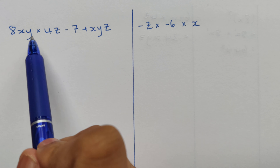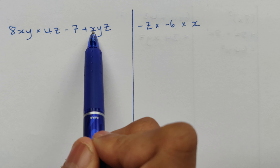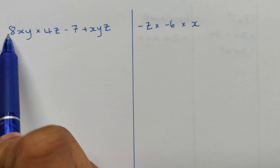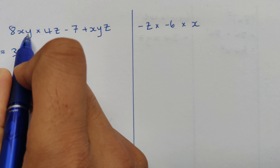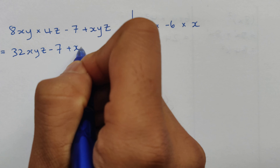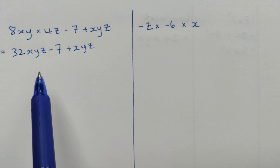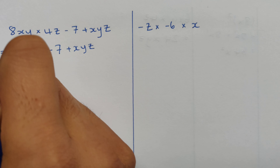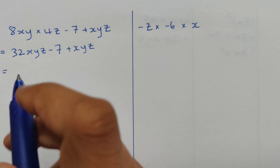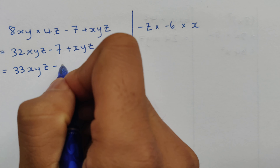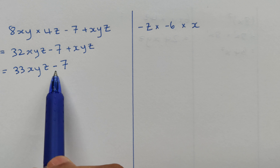Next example: 8xy times 4z minus 7 plus xyz. Let's focus on the multiplication first: 8 times 4 is 32, and xy times z is xyz, giving us 32xyz. Now let's add minus 7 plus xyz. We have subtraction and addition, so we need to find like terms. 32xyz is a like term with xyz, so we add them to get 33xyz, and we keep the constant. Our answer is 33xyz minus 7.